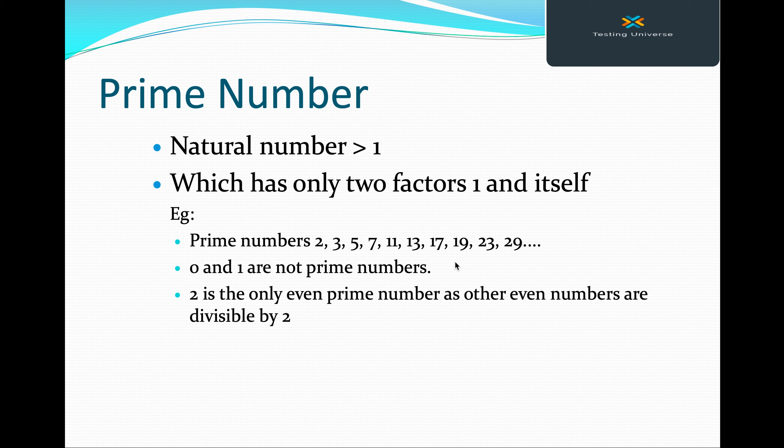So what is a prime number? It is a natural number which is greater than 1 and it has two factors: 1 and itself. In simple terms, any integer number which is divisible by 1 and by itself is called a prime number, and it should not be divisible by any other number.